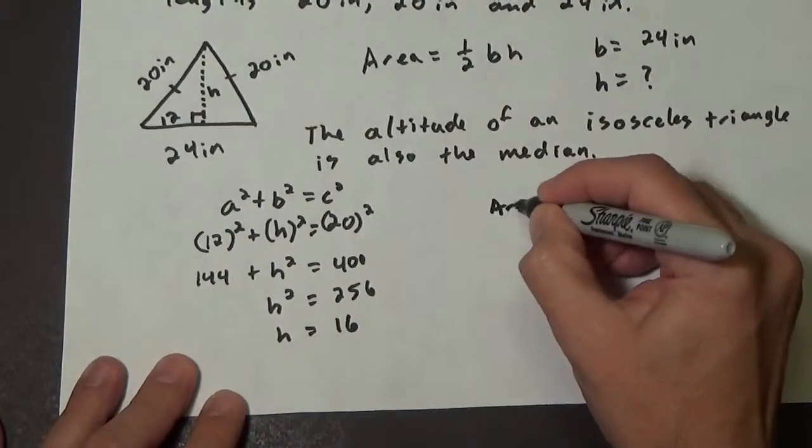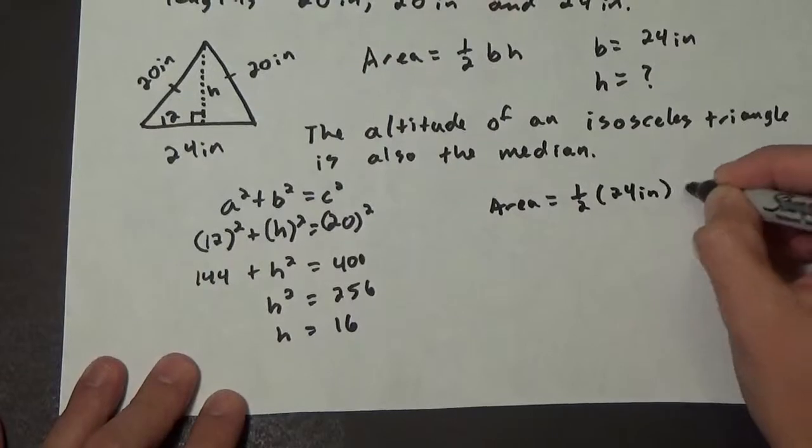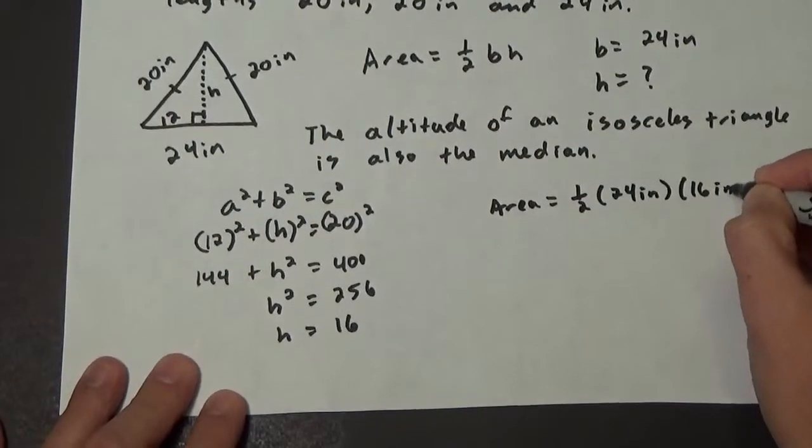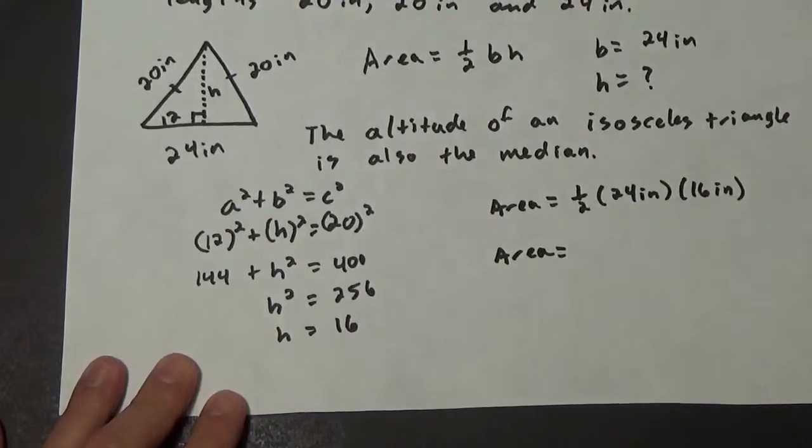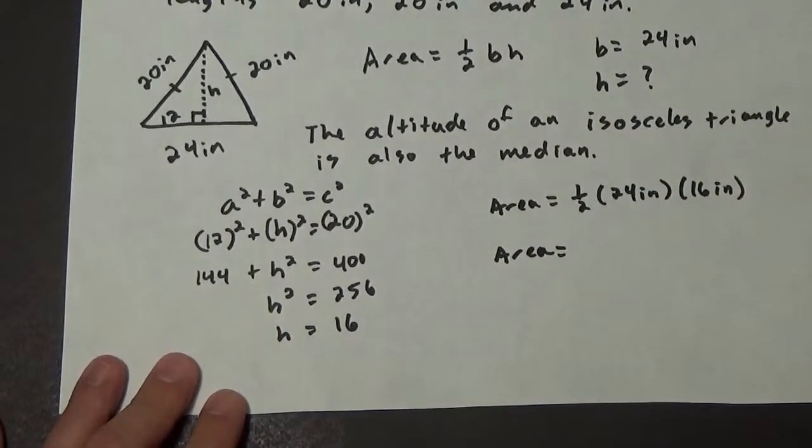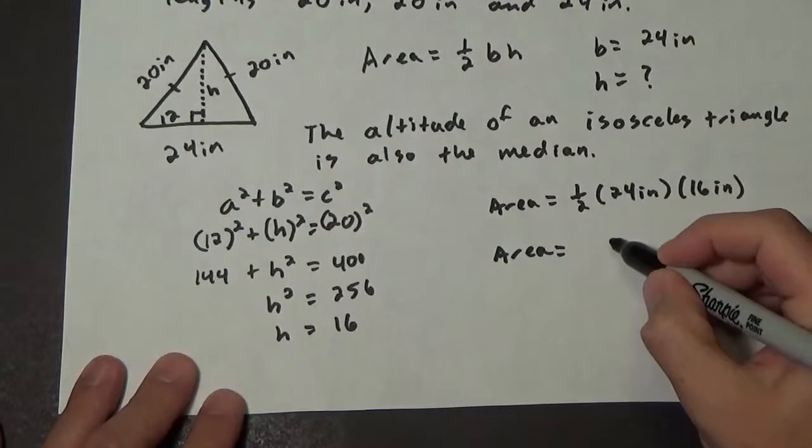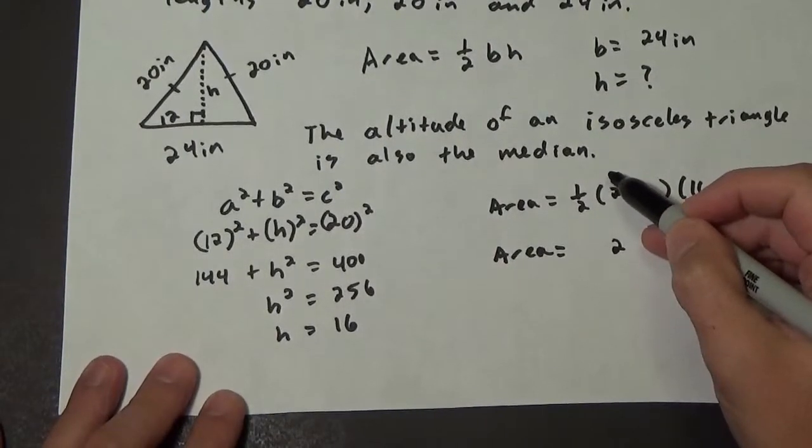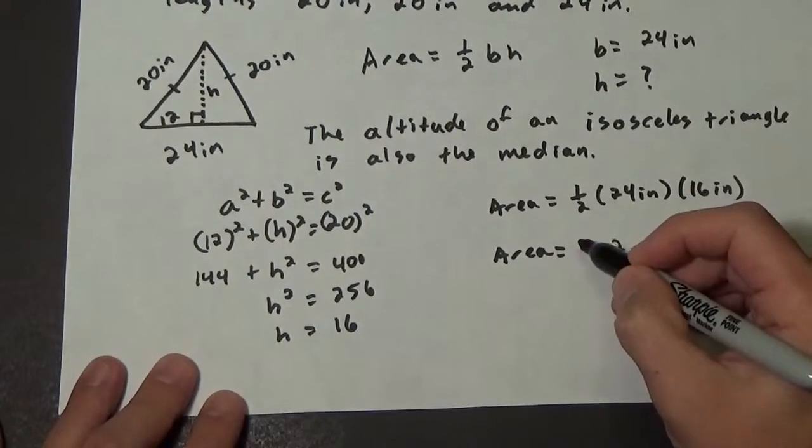go back and calculate our area: one-half times the base of 24 inches times the height of 16 inches. So our area ends up being 192